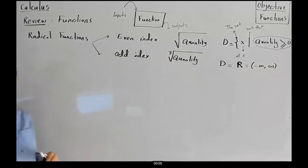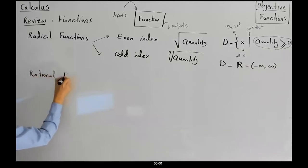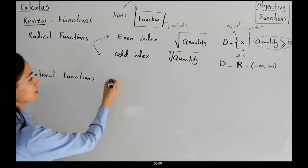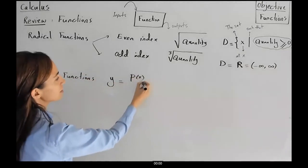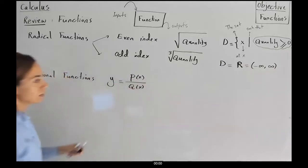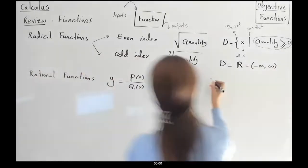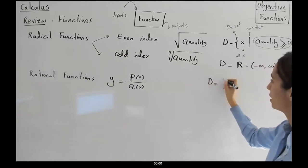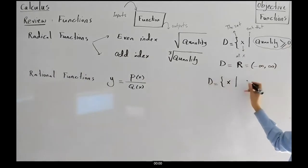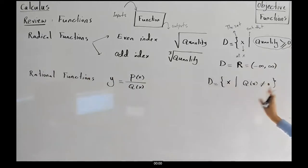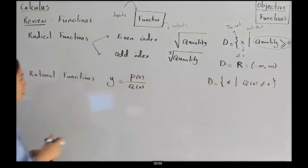We introduced rational functions, represented by Y equals to P of X divided by Q of X. To find the domain of a rational function, the denominator cannot be zero. The domain is the set of all X values such that Q of X is not equal to zero — you must exclude all X values that make Q of X equal to zero.